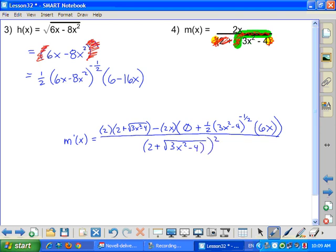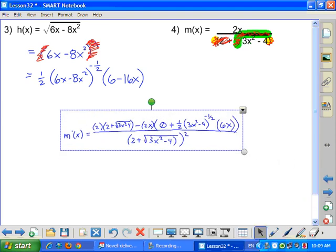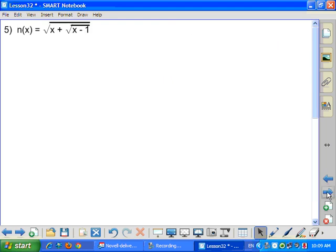All divided by the denominator squared. 2 plus 3x² minus 4 squared. And there you go. So, there is the first step taken care of. So, it can be put inside the chain rule. It can go inside the power rule. It can go inside the quotient rule. Any of the rules we've talked about, it can be applied.